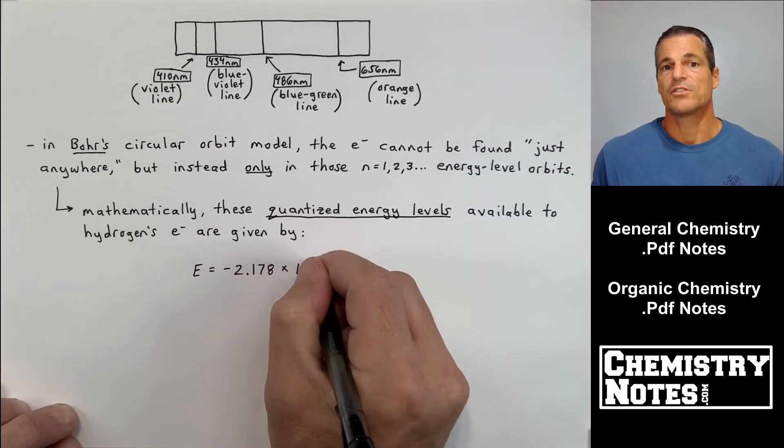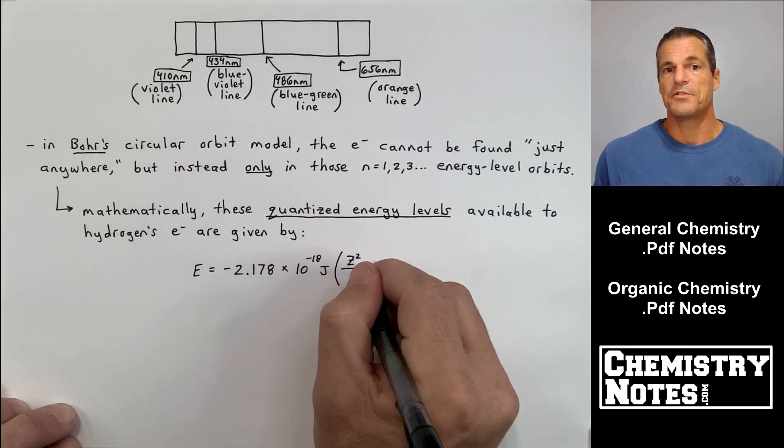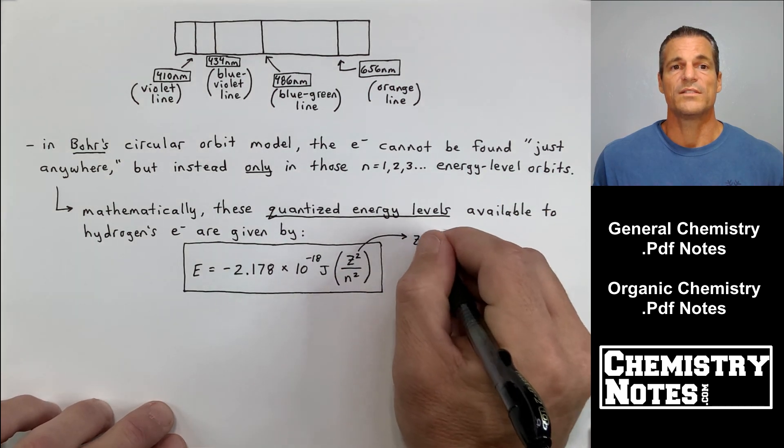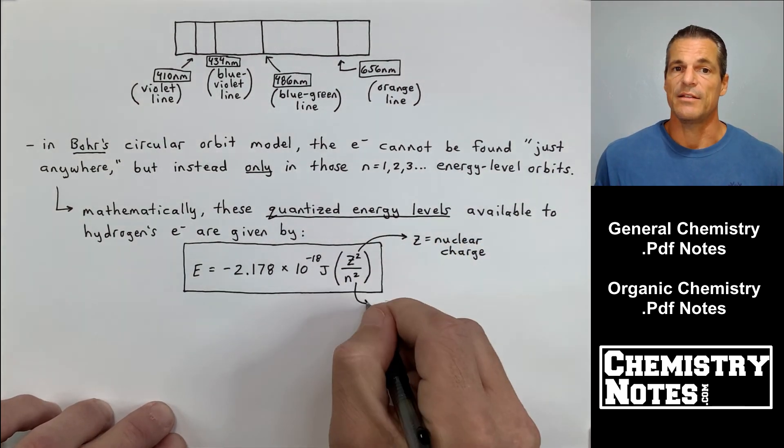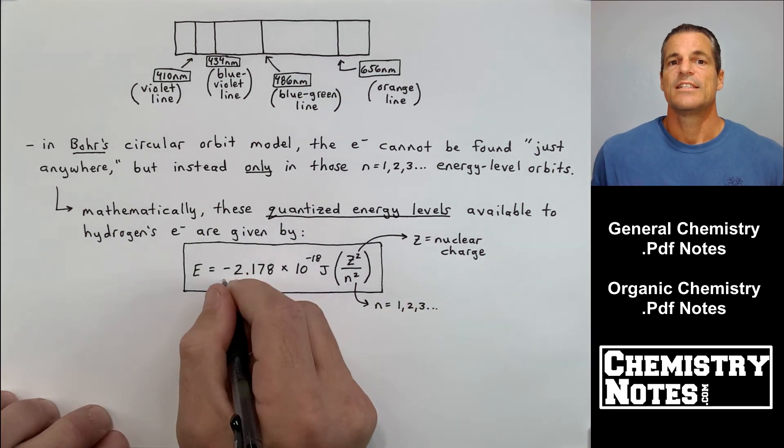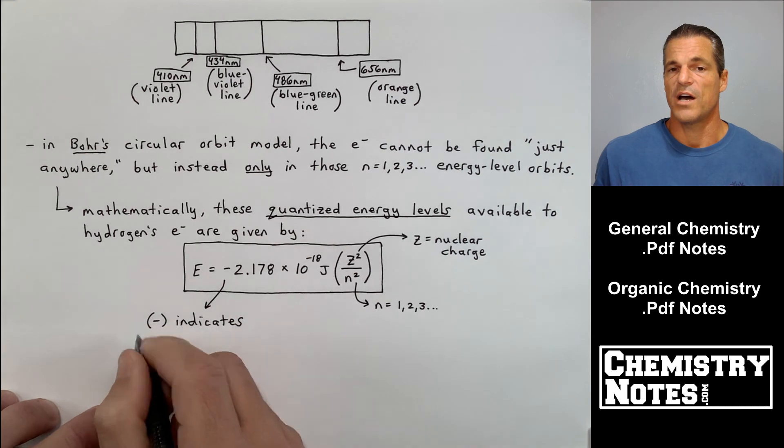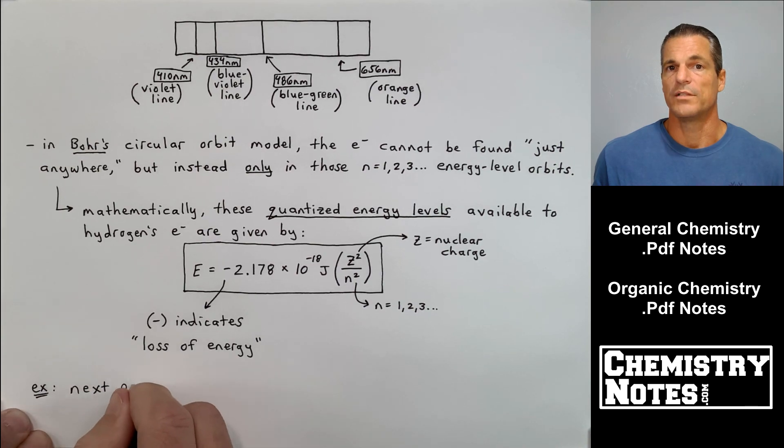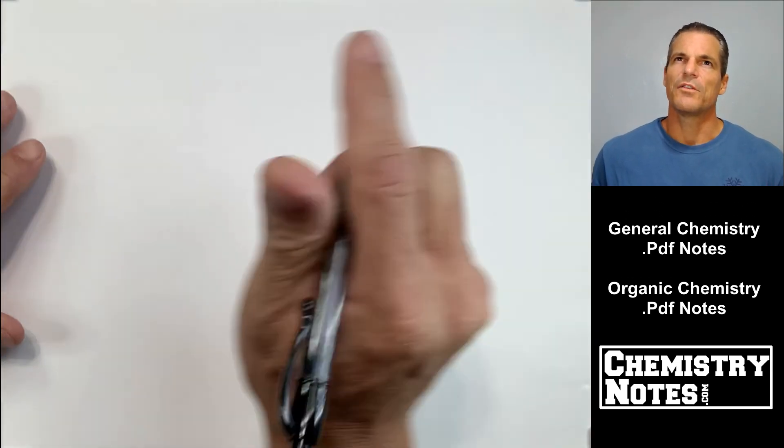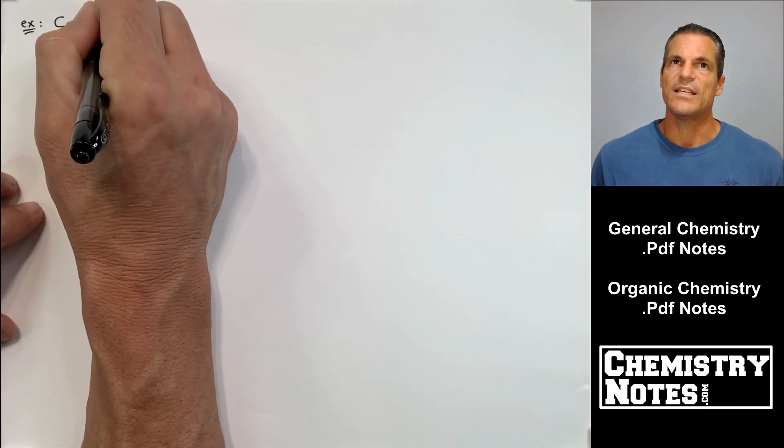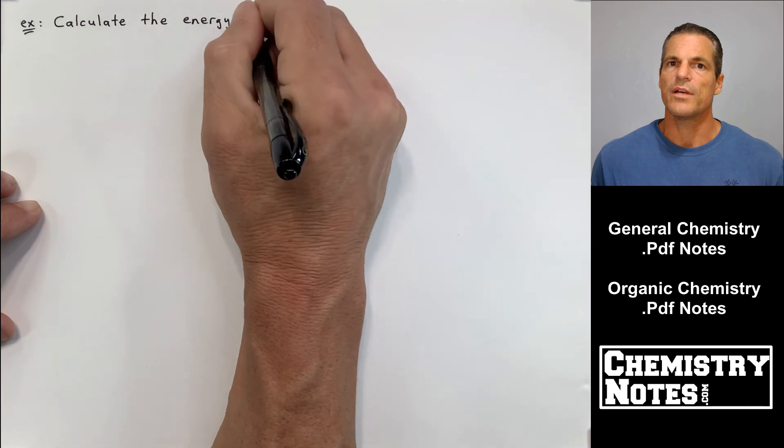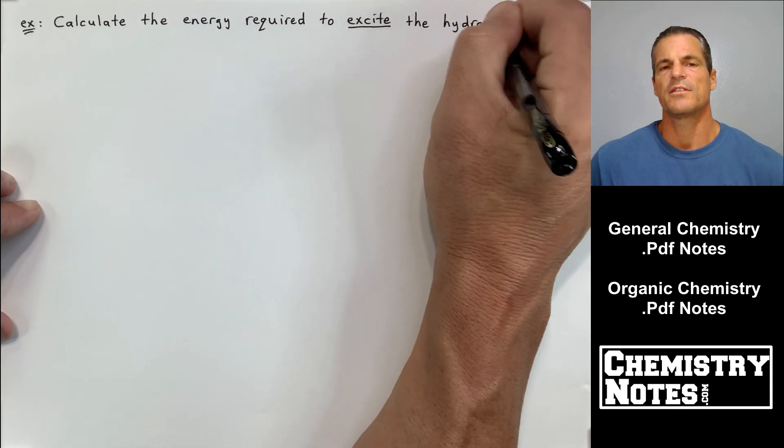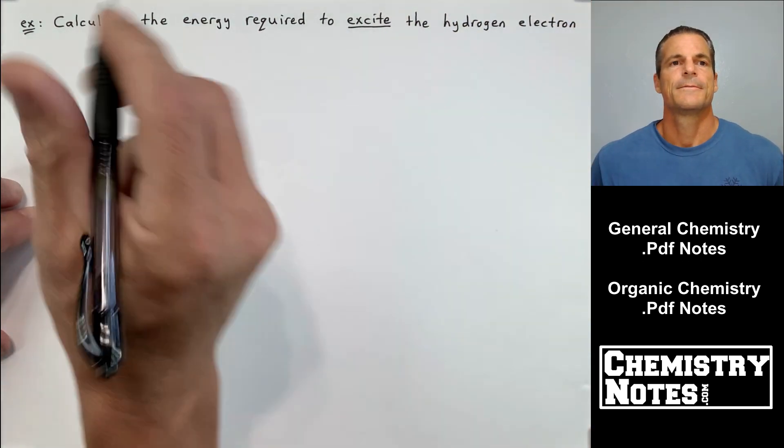Mathematically, these quantized energy levels available to hydrogen's electron are given by the following equation. Energy equals minus 2.178 times 10 to the minus 18th joules times Z squared, where Z is the nuclear charge. So for hydrogen, Z is plus 1, divided by N squared, where N is the energy level 1, 2, or 3. I believe that's called the Rydberg equation. Both of them are essentially the same thing, and the name of the equation is not important.